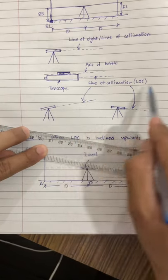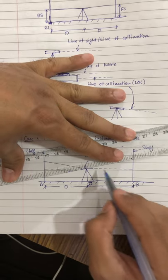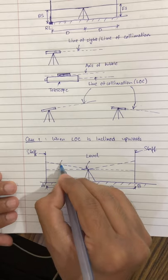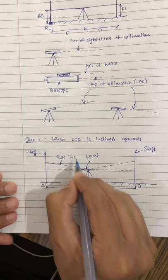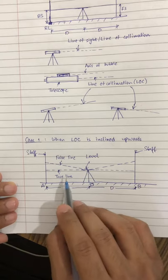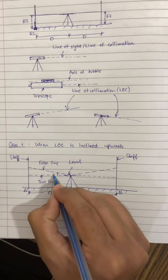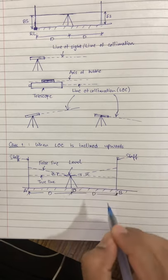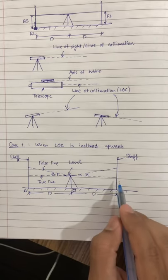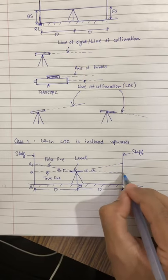With the line of collimation inclined upwards, the reading on the staff will be higher than the true reading. Let the angle of inclination of the collimation line be alpha. At point A, let the true staff reading be Aa (capital A, small a) and the observed staff reading be Aa1, since the false line is inclined upwards. Similarly, at point B, the true reading is Bb and the observed reading is Bb1.